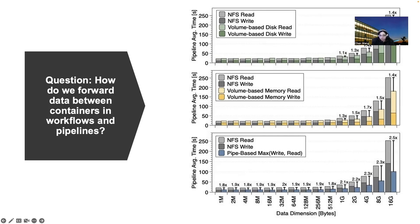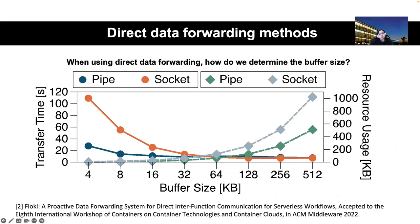The improvement of different solutions over remote storage varies across data sizes. The biggest improvement is for direct communication between pods on the largest data chunk of 16 gigabytes. If we want to enable direct data forwarding, there is a trade-off between resource utilization for your buffer and the size of the data being forwarded, which is determined by the buffer size. More details about the buffer size trade-off are presented in the paper called Blocky, published at middleware workshops.